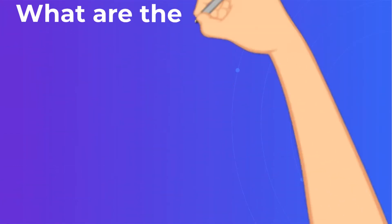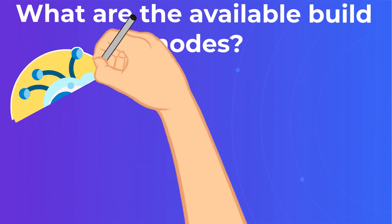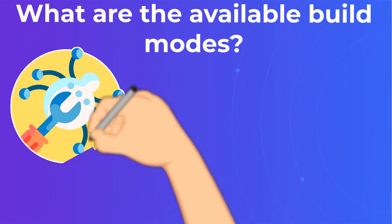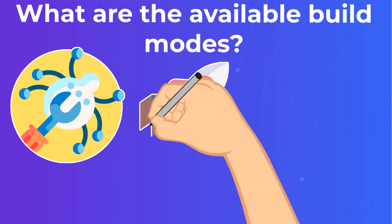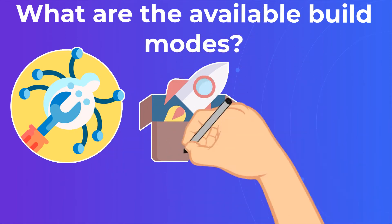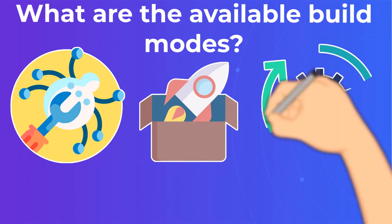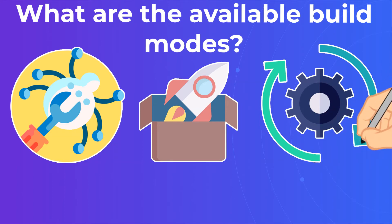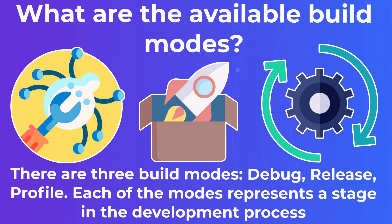What are the available build modes? There are three build modes: debug, release, and profile. Each of the modes represents a stage in the development process. The debug mode is used while the app is still in development and when you need to identify and remove existing and potential errors. Flutter's hot reload feature allows you to do this in real-time without needing to restart the software every time you make a change.